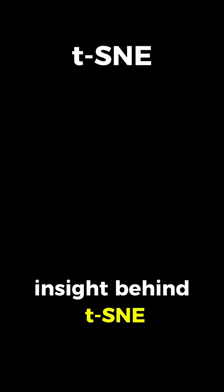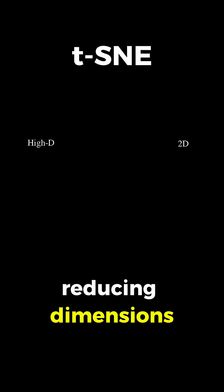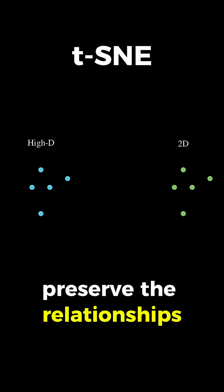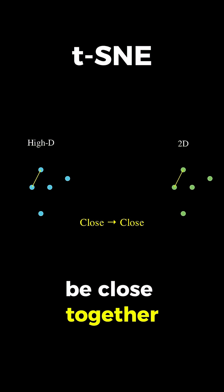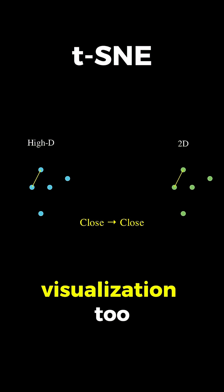The key insight behind t-SNE is that when we're reducing dimensions, we want to preserve the relationships between points. If two points are close together in high-dimensional space, they should probably be close together in our 2D visualization too.